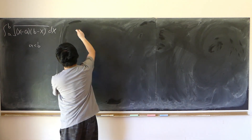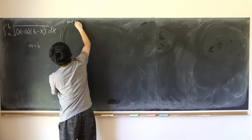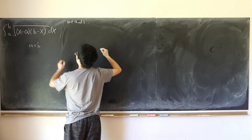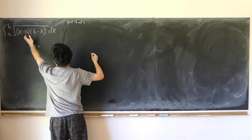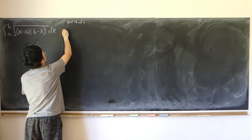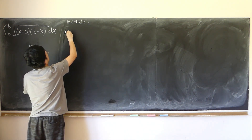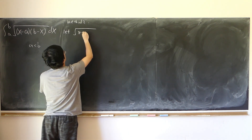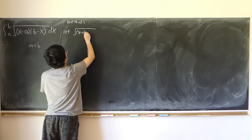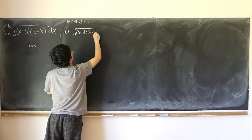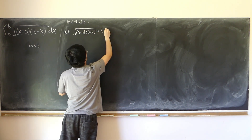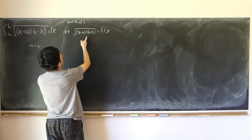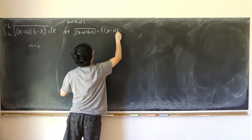We have a quadratic with two real roots, so we can let the square root of (x minus a)(b minus x) equal t times (x minus a), using one of the real roots, minus a.